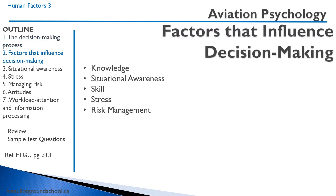There are a number of factors that can influence decision-making. It's important to identify these factors when you have to make a decision so that you are not being unduly influenced. Things like knowledge — ignorance is obviously terrible for making a decision — situational awareness, your skill level. Somebody with higher skill is going to make a better decision. Stress will have an adverse effect on your decision-making, and risk management is also a factor — you have an internal process in your mind for how you're going to manage and mitigate risk.